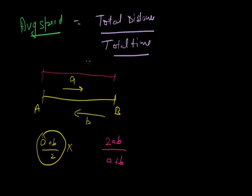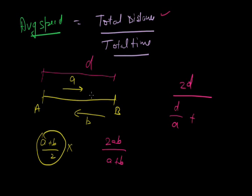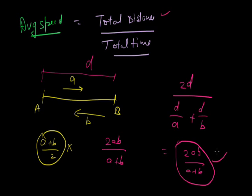Let me explain how 2AB upon A plus B is derived. Assume total distance A to B is D. Total distance travelled going A to B and back B to A is 2D. Total time taken is D upon A plus D upon B. Solving this gives 2AB upon A plus B. So the average speed when distance is constant is 2AB upon A plus B. If you are in higher classes, this is the harmonic mean between the speeds.